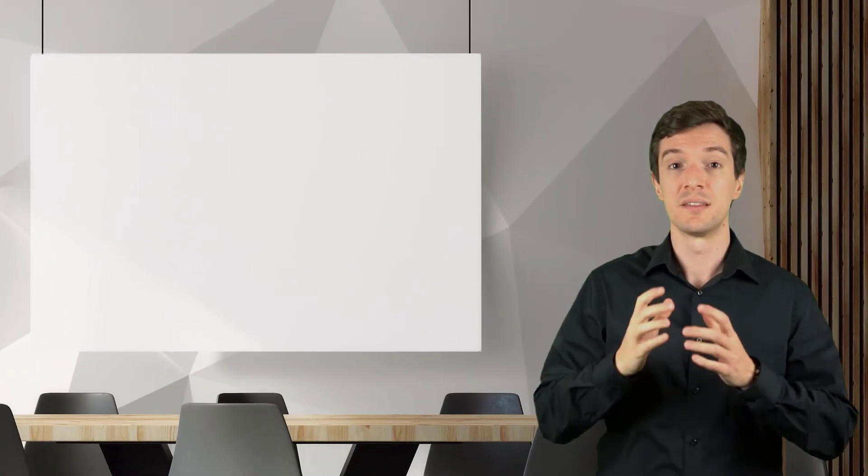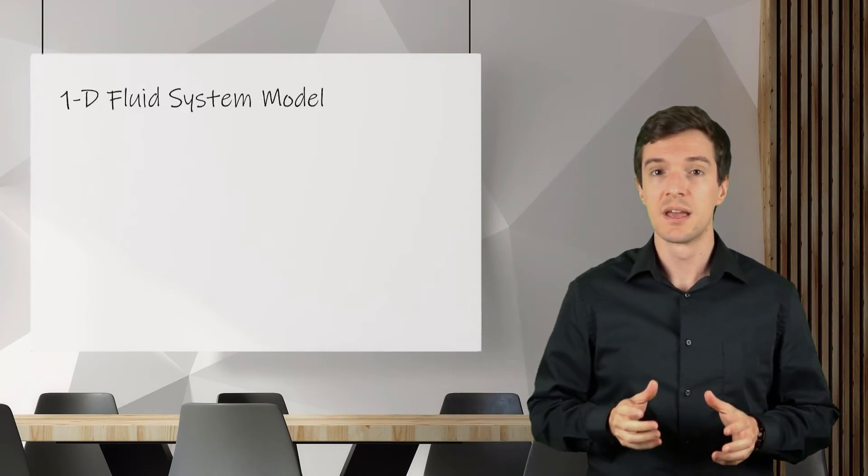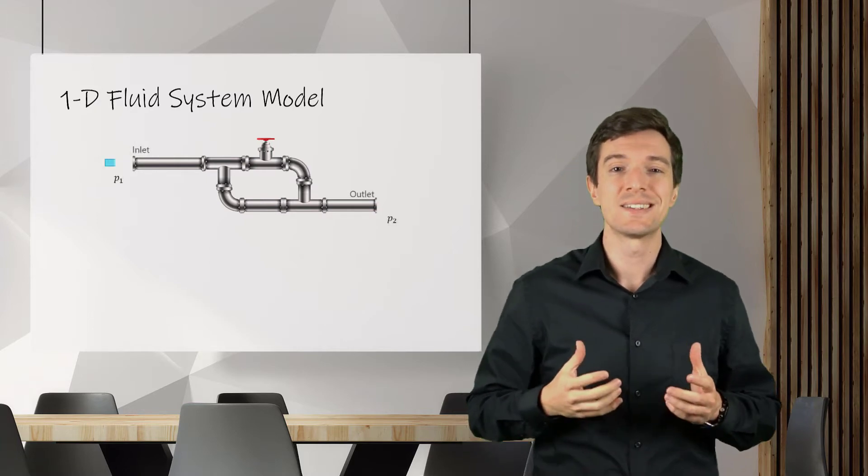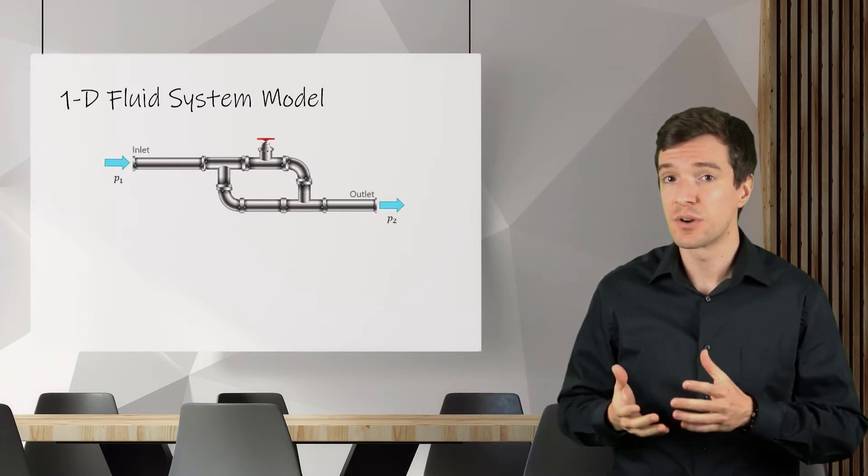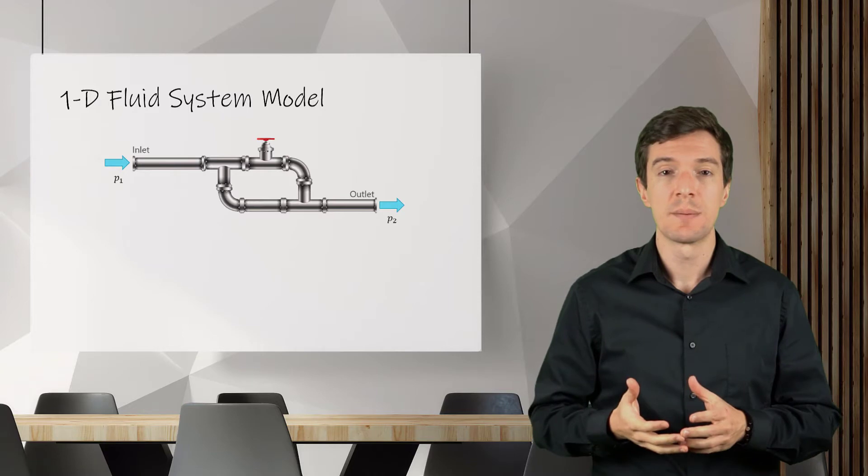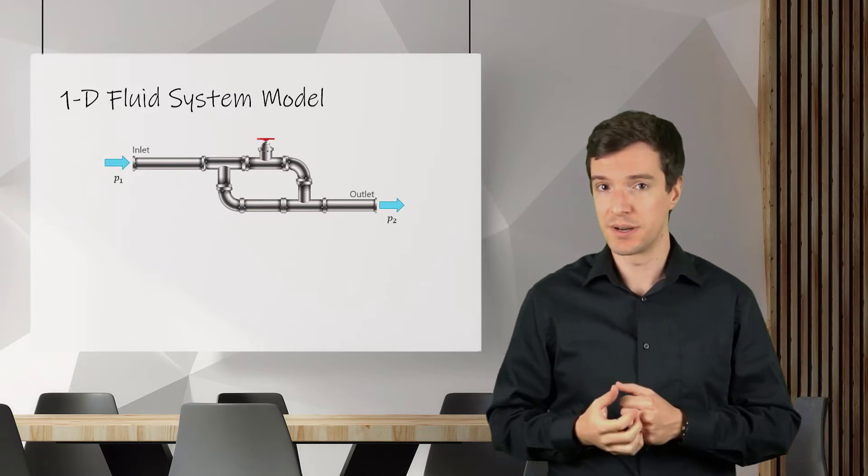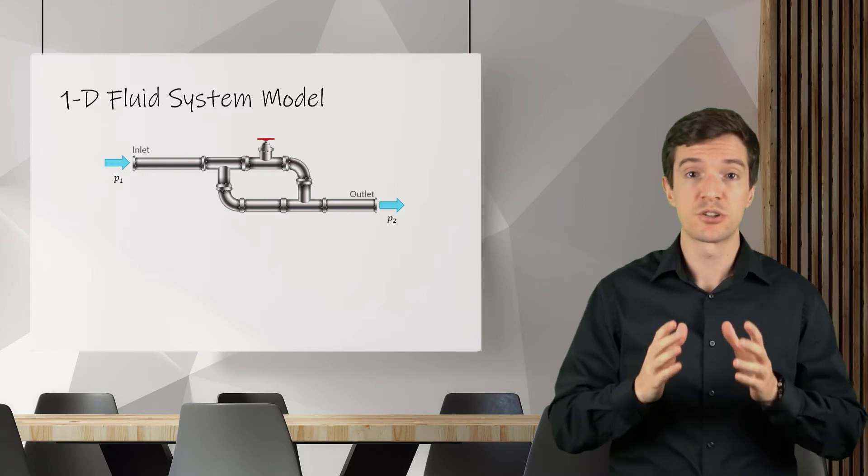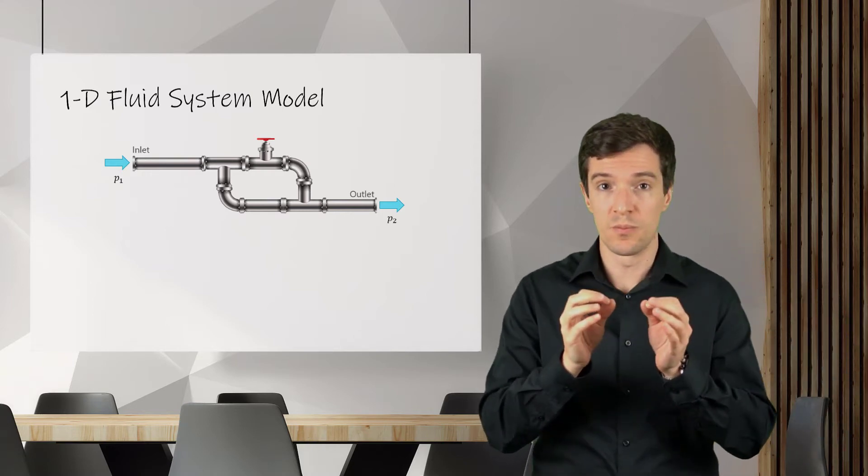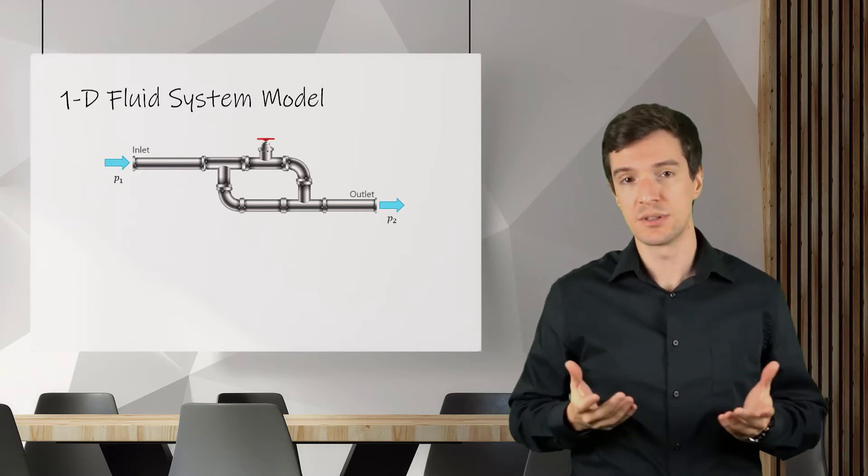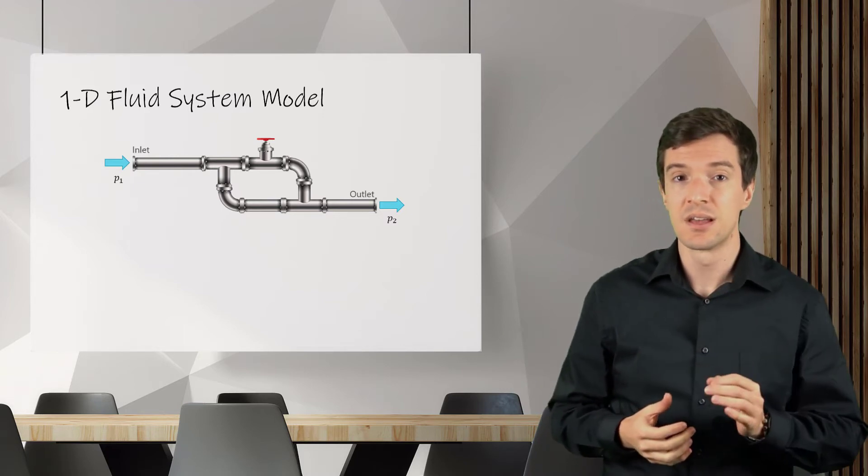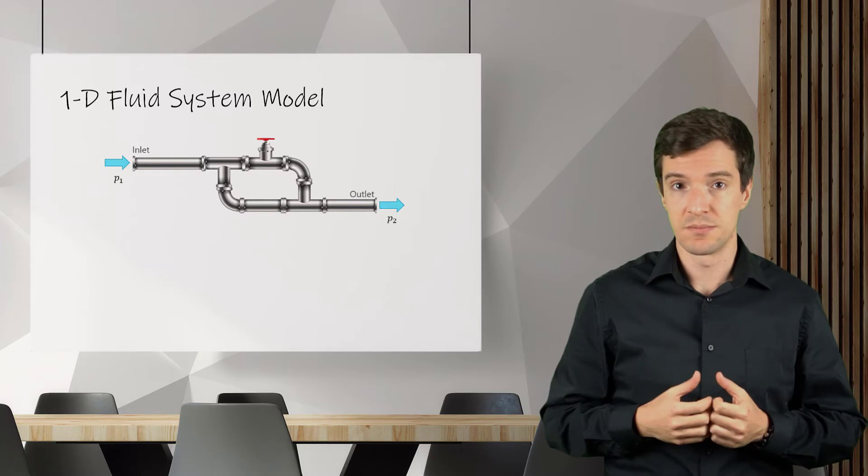The 1D model allows us to analyze a system of different connected components and estimate the overall pressure drop given by a combination of these parts, simply taking into account the pressure drop that each component will add to the system. This is the essence of the 1D system model.